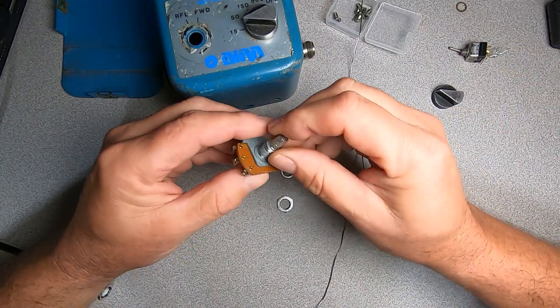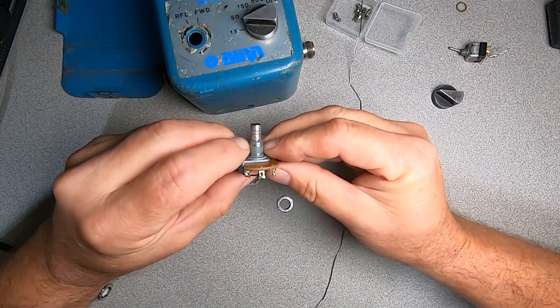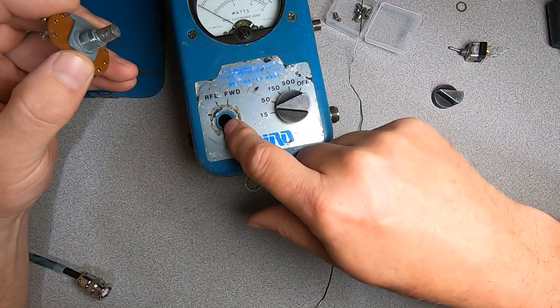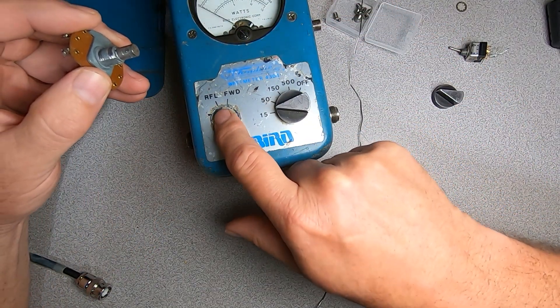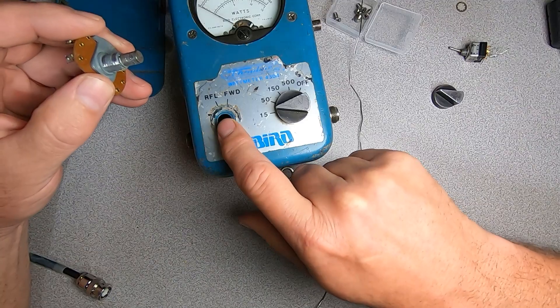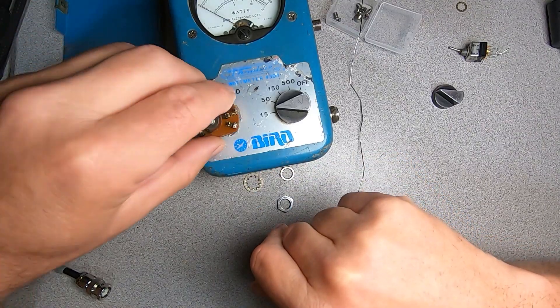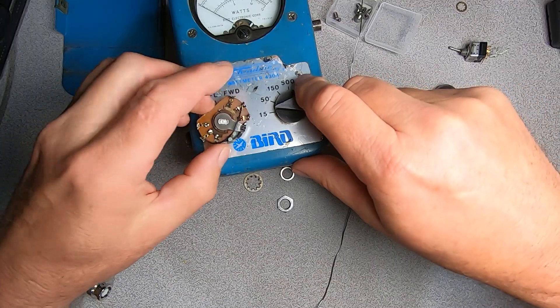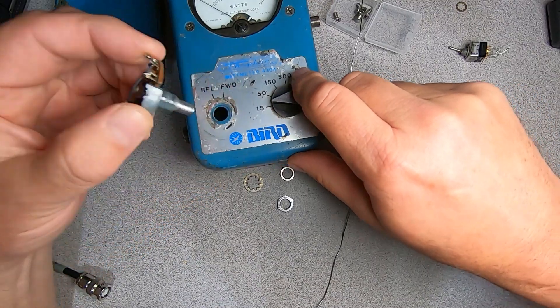You can see the flats that are cast into the body of this switch. Originally, I would believe the meter itself would also have this hole punched out with those flats in it. And as you can see over time that all that stuff is wallowed out and there's a lot of play in there.